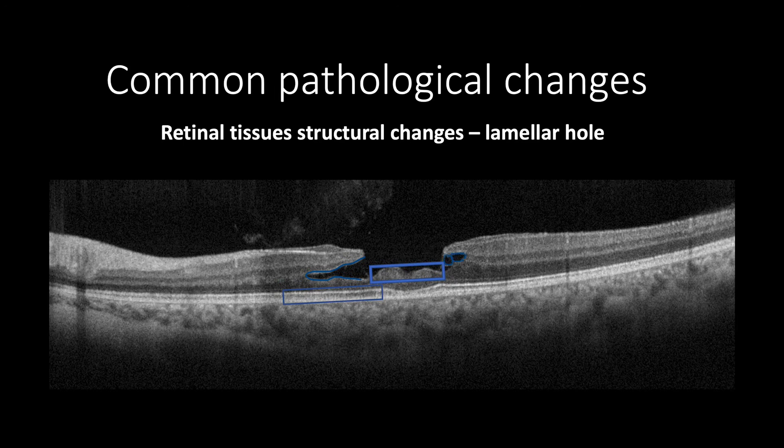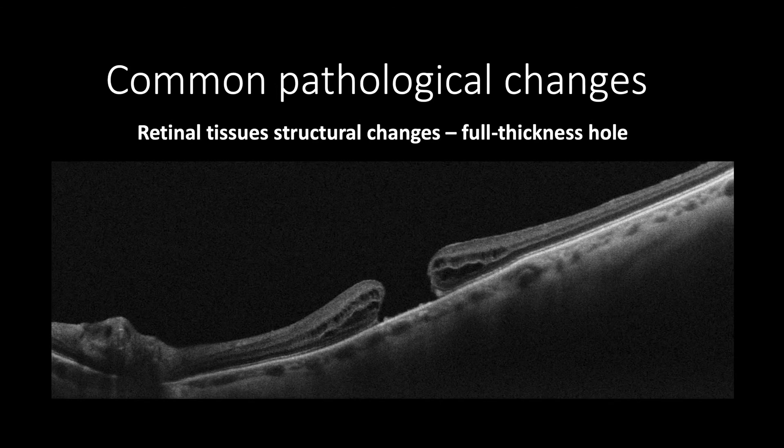In contrast, full thickness defects will feature a full thickness macular hole. In this case of stage 4 full thickness macular hole in a myopic eye with RPE drusen-like changes and cystic formation in both edges of the hole.